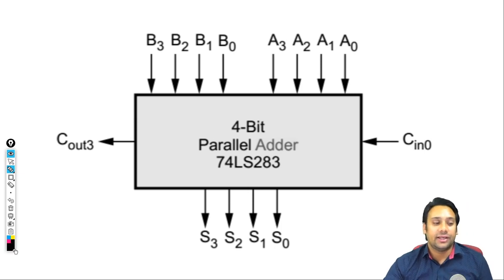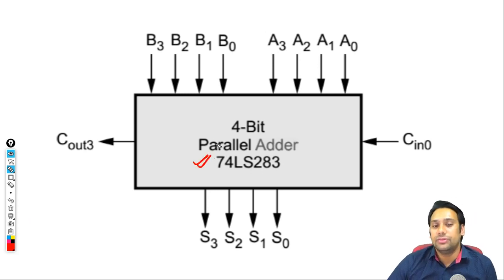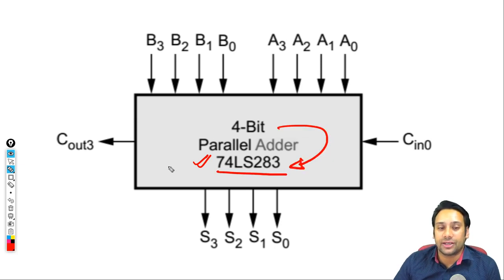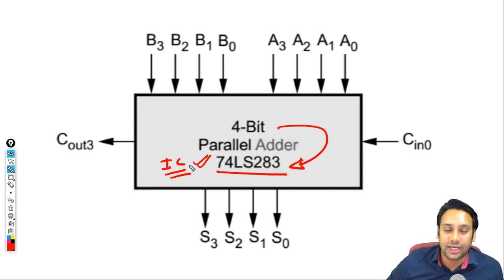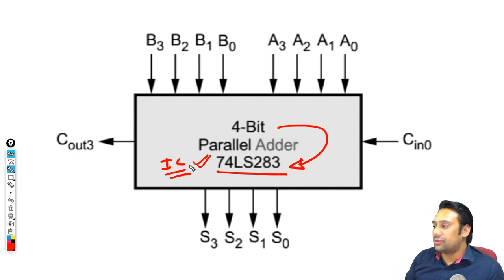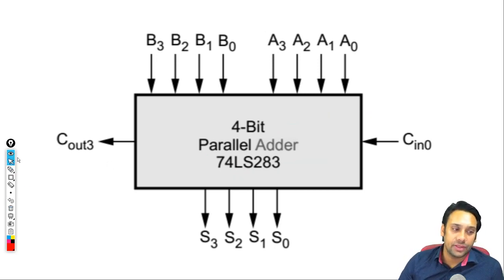For this ripple carry adder, we represent it with the help of an IC number. This is your 4-bit ripple carry adder IC number — IC number is like a roll number, so that we can identify every digital circuit uniquely. So this is representing a block diagram of a parallel adder.